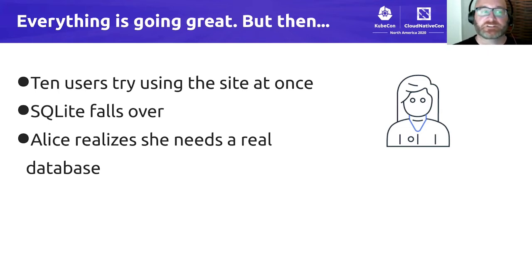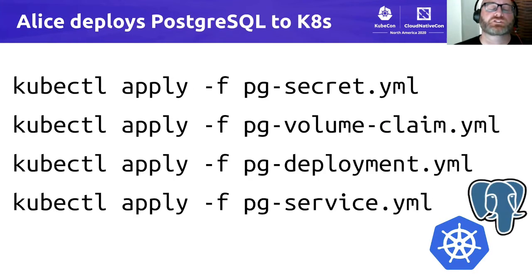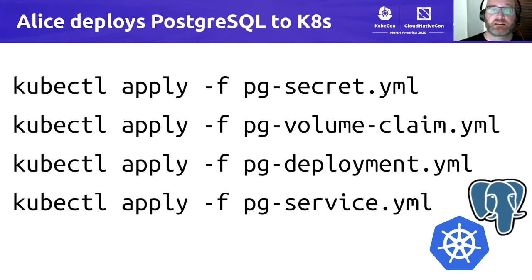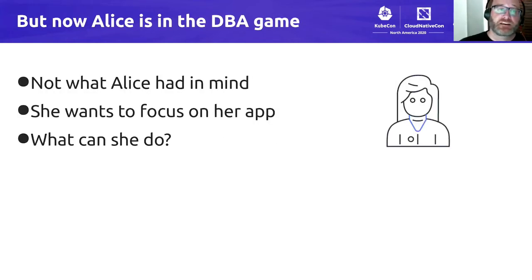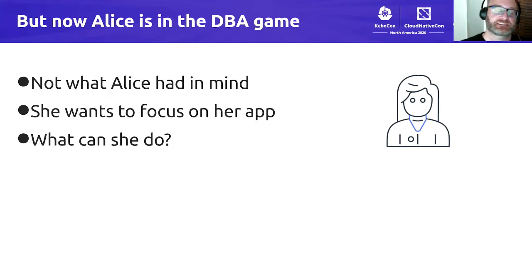So Alice realizes that she needs a real database. She knows that Postgres is a good example of a real database that is heavily concurrent. She Googles for tutorials on how to set up Postgres to run on Kubernetes. Most of those tutorials boil down to creating a secret in Kubernetes, creating a persistent volume claim for storage, creating a deployment for the database server, and then a service record for the Postgres database service. Unfortunately, Alice realizes that she's now in the database administrator game, and that's definitely not what she had in mind.